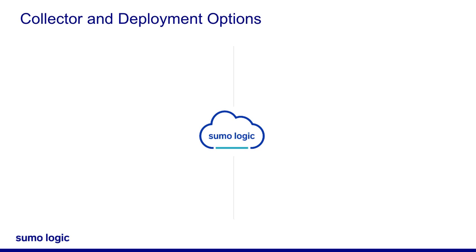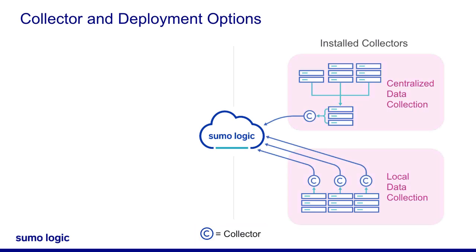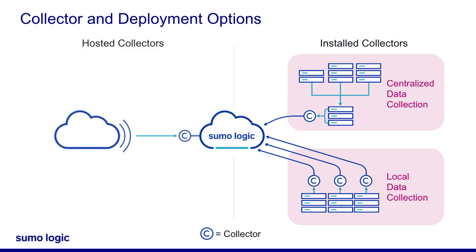You can choose to install a number of collectors to keep your topology simple or centralized, or install many collectors on different target hosts locally to distribute the bandwidth across your network.